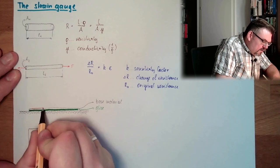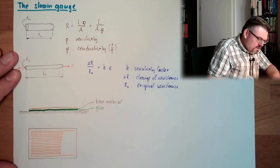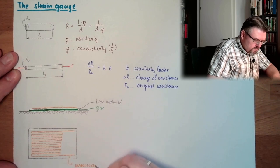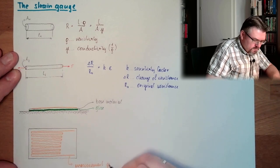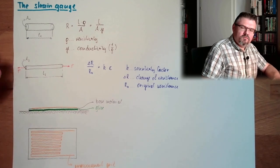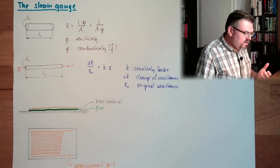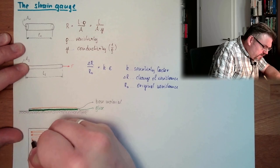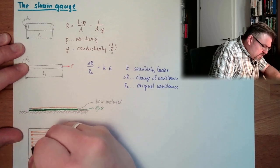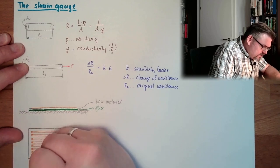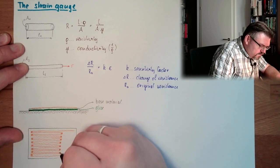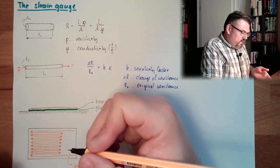This is somewhere here located. The measurement grid. This grid consists of different materials. With different case. Usually those parts are a little bit thicker. Here. So that we have a defined direction.